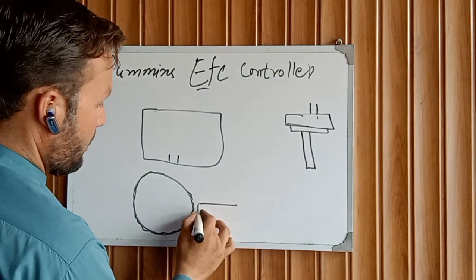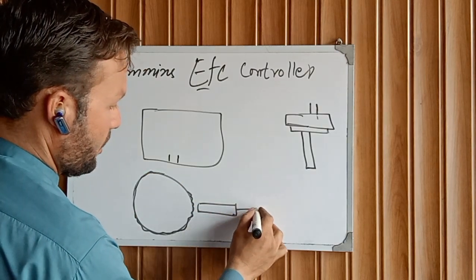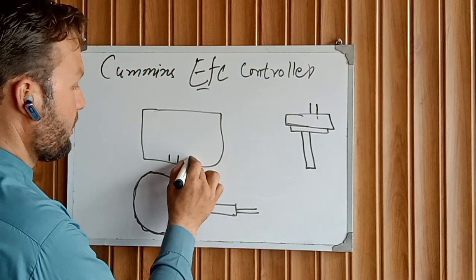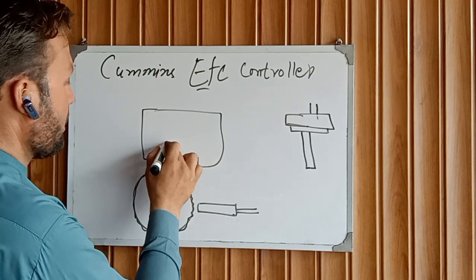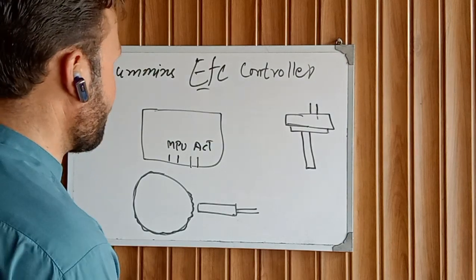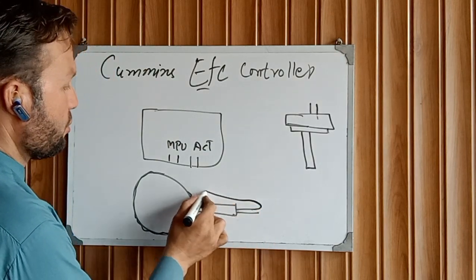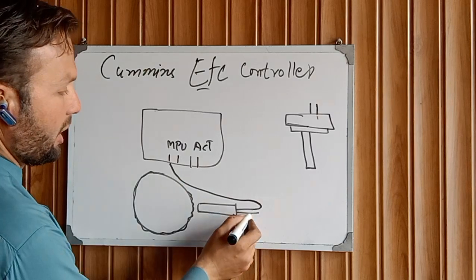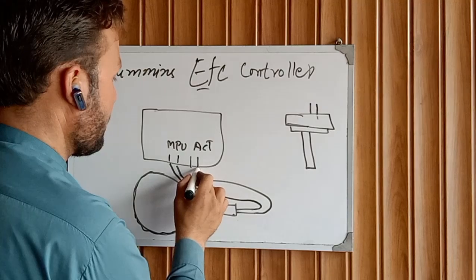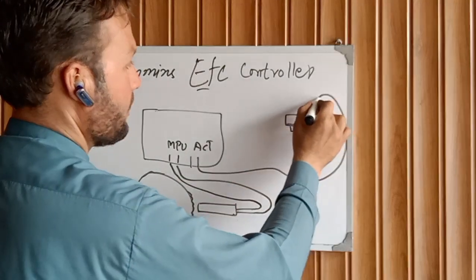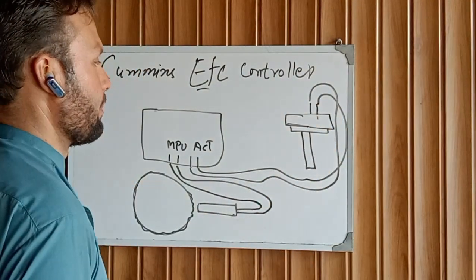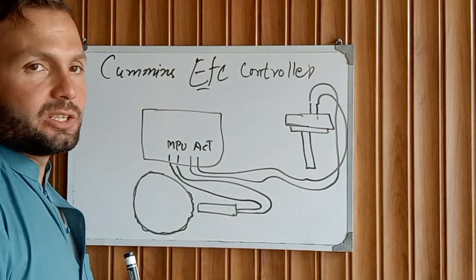This is our, for example, our flywheel. This is our, for example, MPU. The MPU has two wires. And this is the MPU, this is the actuator. First of all, we are taking two wires from here to there, like this. And then take output from here to there. As you can see here, this time, now let's see the working.